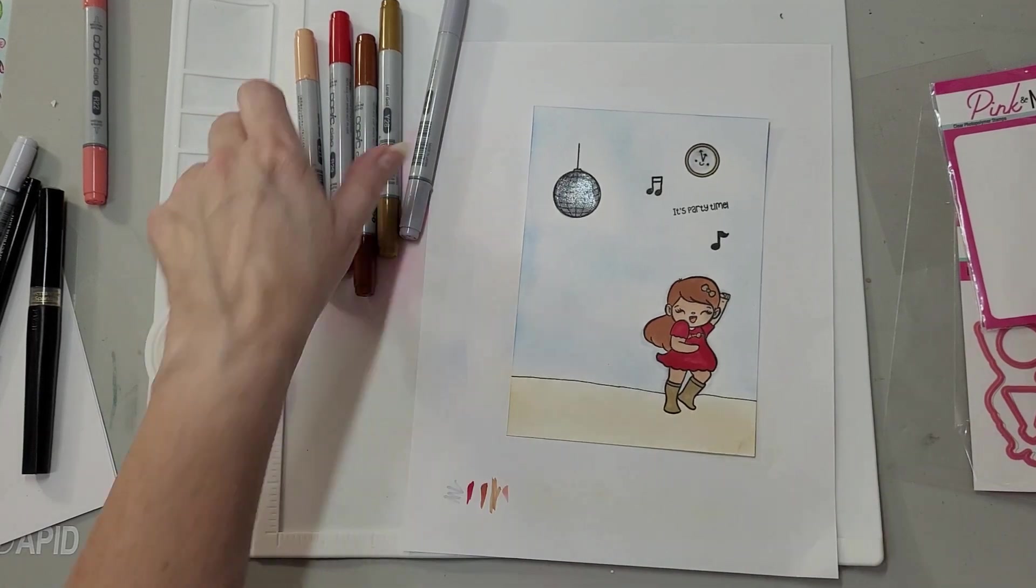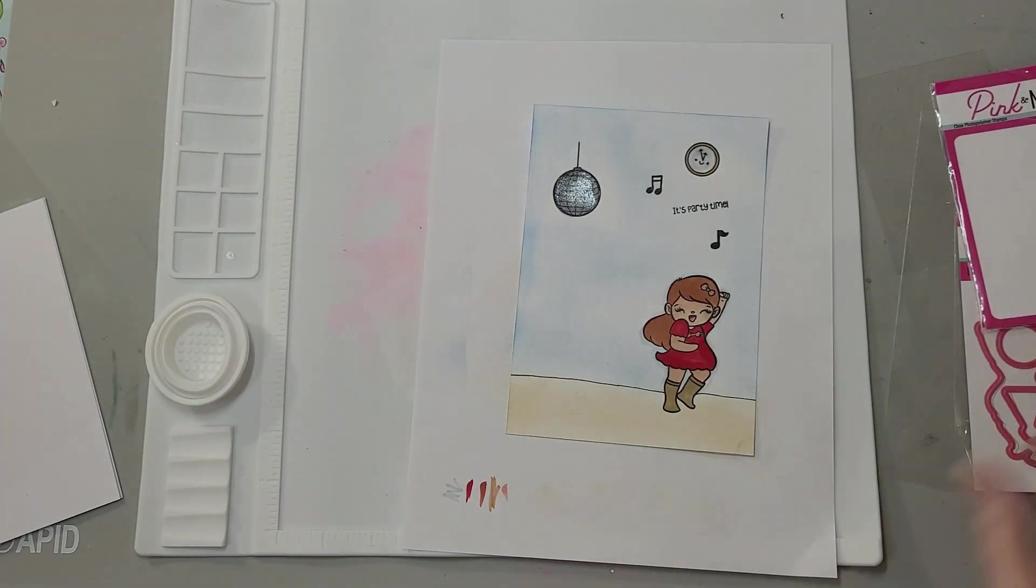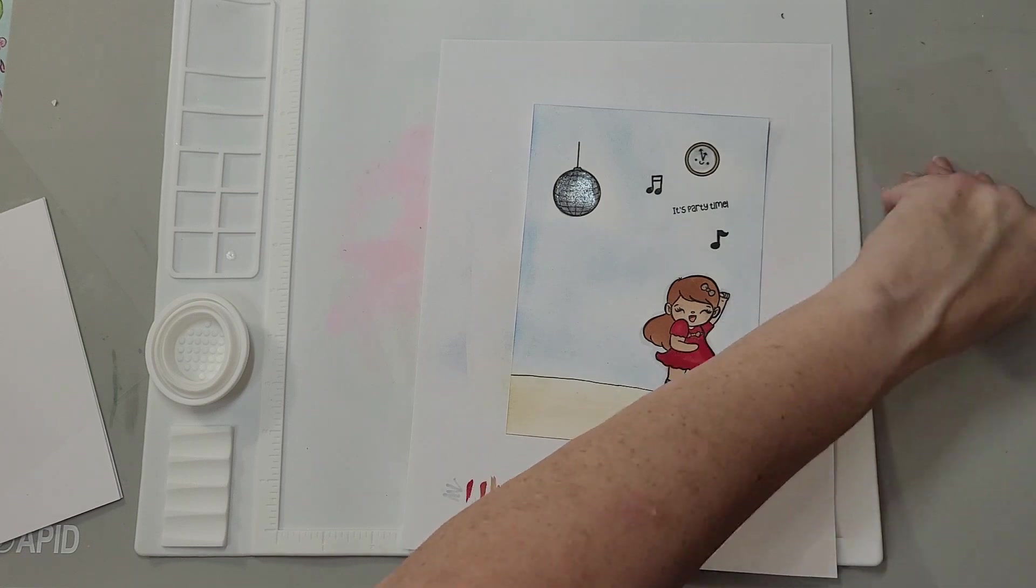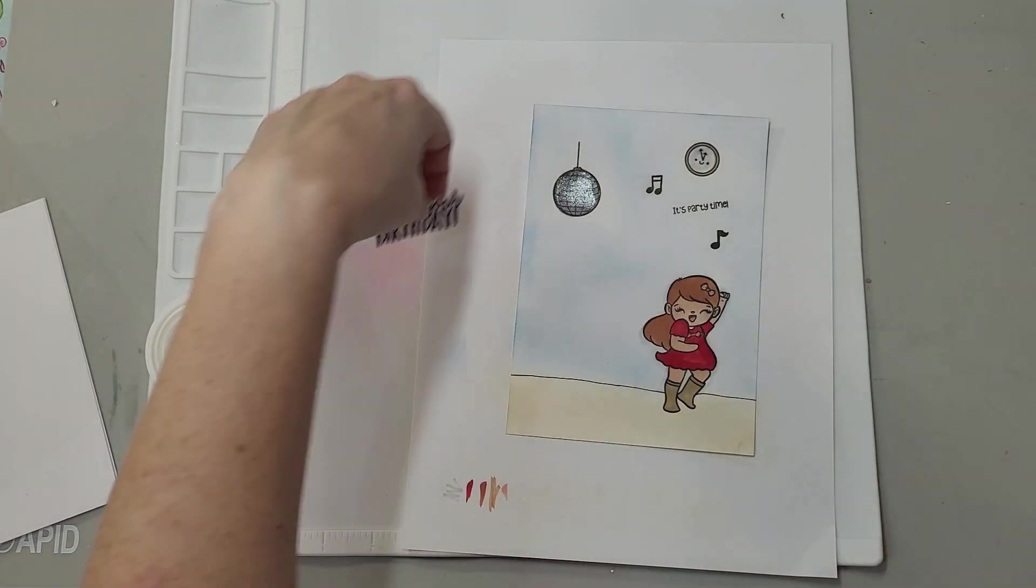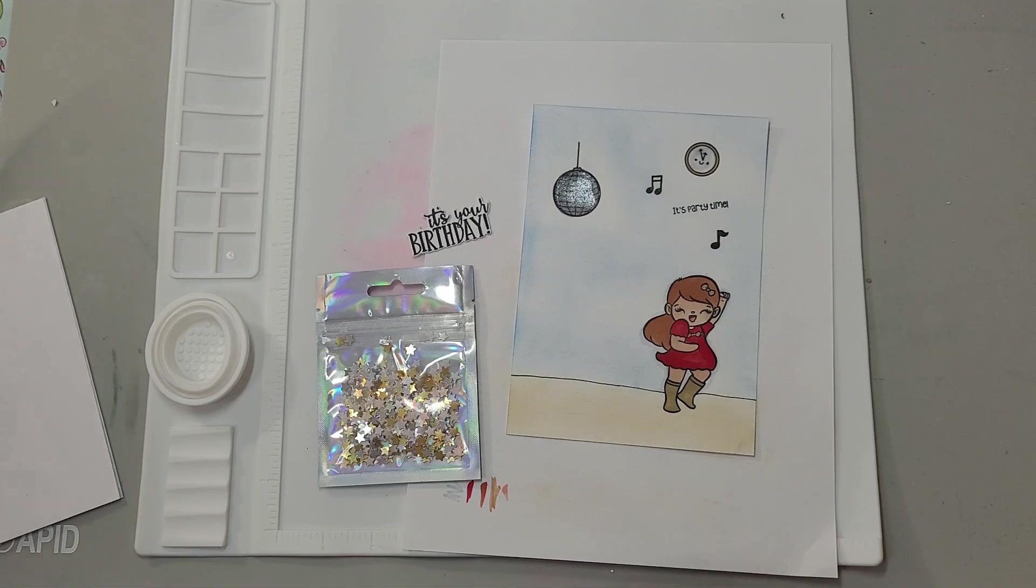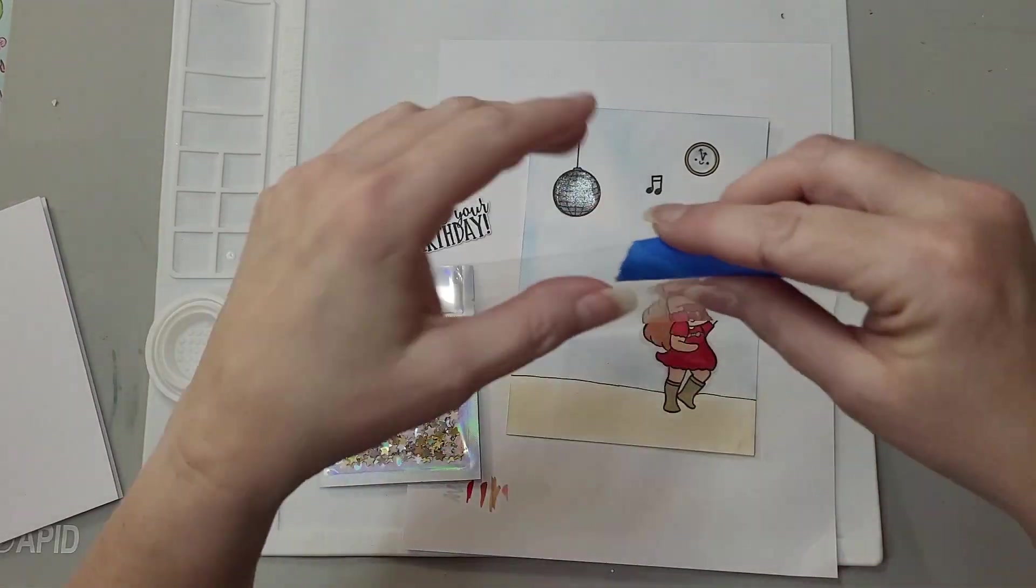Alright, so what we need to do now, let's put all this away. We'll need this, we'll need our shaker bits. Alright, so here is our acetate.